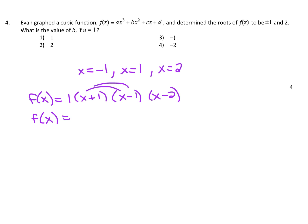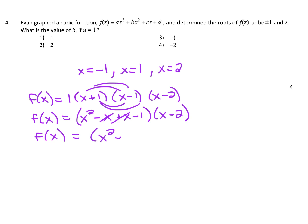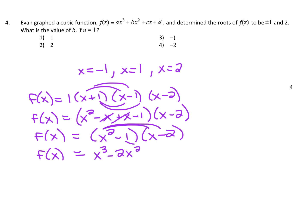Let's multiply together the first two parentheses first. That gives x squared minus x plus x minus 1. The negative x and the positive x just cancel, so that leaves f of x equal to x squared minus 1, times x minus 2. Now we'll multiply by x minus 2: x squared times x is x cubed; x squared times negative 2 is negative 2x squared; negative 1 times x is negative x; and negative 1 times negative 2 is positive 2.